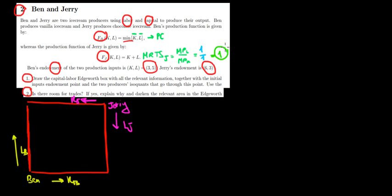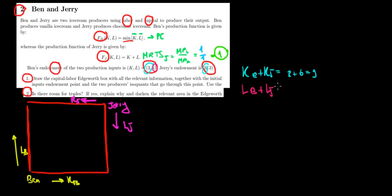With that established, we can draw the isoquants on the Edgeworth box. First, we need the endowment point. Since this is a closed economy, we add up the capital: Ben's three plus Jerry's six equals nine total units of capital. For labor: Ben's five plus Jerry's three equals eight total units of labor. So the Edgeworth box has nine units of capital and eight units of labor.